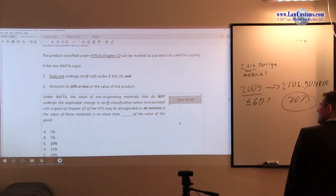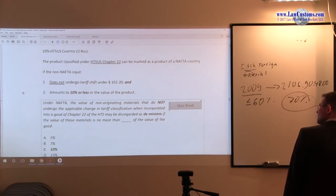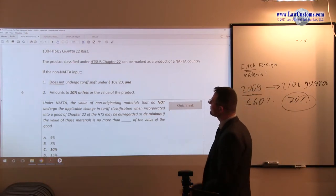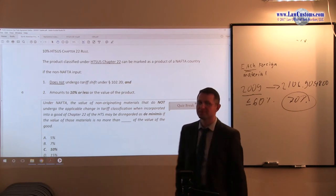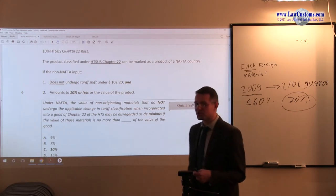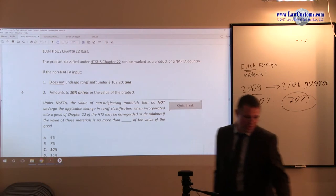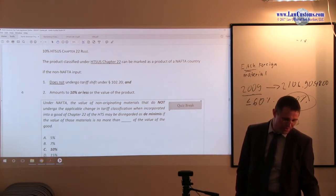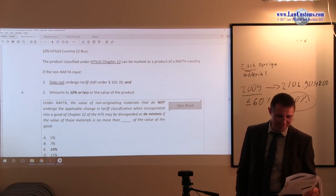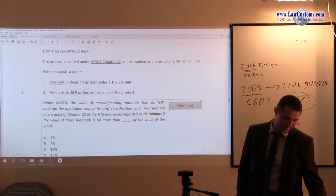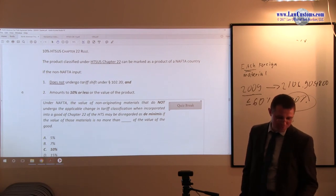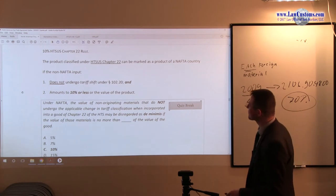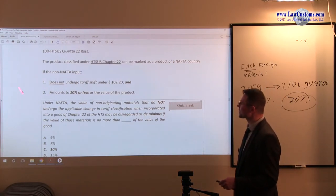Next one. Remember I mentioned an exception. Under the NAFTA marking rules, you have a Chapter 22 exception. If something is in Chapter 22—and Chapter 22 is primarily designed for alcoholic beverages, specifically 22.08.30 through 22.08.70—you have this exception.